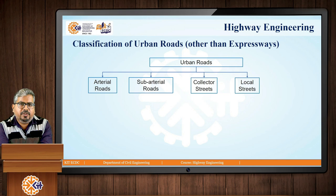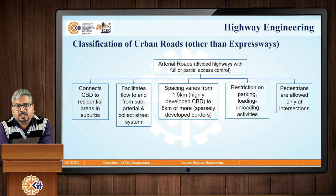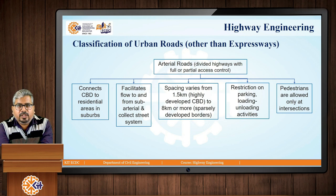Urban roads are classified into four types: arterial roads, sub-arterial roads, collector streets, and local streets. Arterial roads are divided highways with full or partial access control, connecting the central business district to residential areas in suburbs and facilitating traffic flow to or from the sub-arterial and collector street system. Spacing varies from 1.5 km for highly developed CBDs to 8 km or more for sparsely developed borders. Parking and loading/unloading are restricted, and pedestrians are only allowed at intersections.